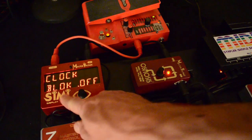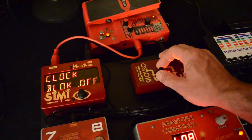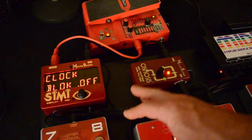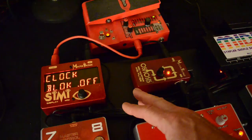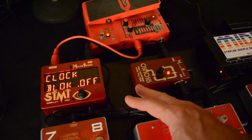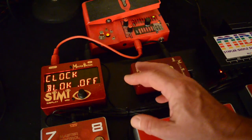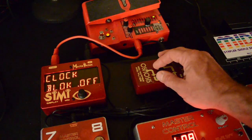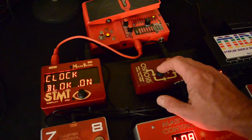And then again, you can set the clock block individually for each program. The reason you might want that is some gear, if you send it MIDI clock, will automatically sync to MIDI clock if it's coming in, like the Strymon timeline. Well, sometimes you want to have a really fast delay time or something, so you don't want that MIDI clock to take over. So you can actually block the clock for individual programs.